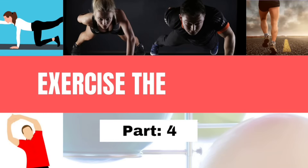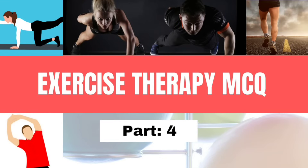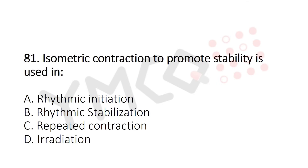Welcome to Part 5. Question 81: Isometric contraction to promote stability is used in — option A: rhythmic initiation, option B: rhythmic stabilization, option C: repeated contraction, option D: radiation. The answer is option B: rhythmic stabilization.